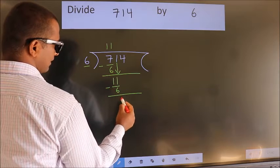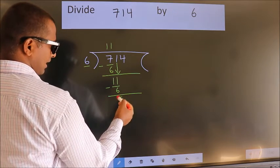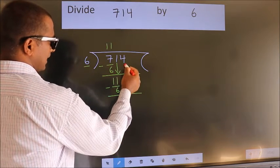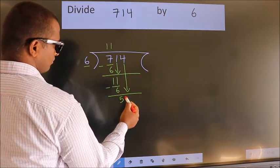Now subtract. We get 5. After this, bring down the beside number.